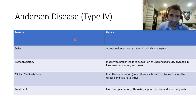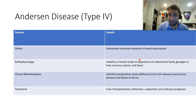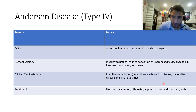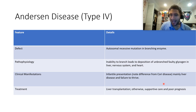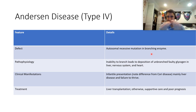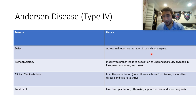Anderson disease is a mutation in branching enzyme. Inability to branch leads to very long glycogen chains accumulating in the liver, nervous system, and heart. It presents in infancy — very different from Cori disease which presents more in adulthood. You get liver disease, failure to thrive, and involvement of nervous system and heart. The long glycogen chains are toxic. Treatment options are only supportive care or liver transplantation; prognosis is very poor.